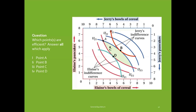Now, here's a question — pause the video, think about it, then unpause when you're done. Which of the following points are exchange efficient according to this Edgeworth box diagram? Point A, point C, point B, or point D? Remember that you can select more than one answer.